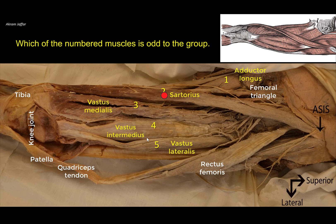If we look at the sartorius muscle, it is also a member of the anterior compartment of the thigh, so it has something in common with three, four, and five. In addition to that, three, four, and five, as part of the quadriceps femoris, are supplied by the femoral nerve — as is the sartorius muscle. If we think of the adductor longus, it is located medially. It is a member of the medial compartment of the thigh, not the anterior compartment like the other four. And it is supplied by the nerve of the adductor compartment, which is the obturator nerve. So that's why it is odd to the group — it belongs to another compartment and is supplied by a different nerve.